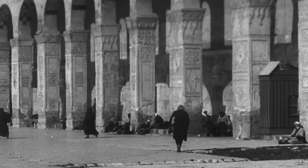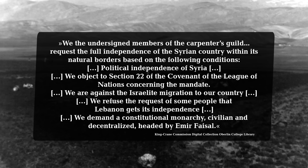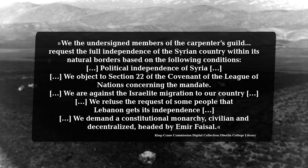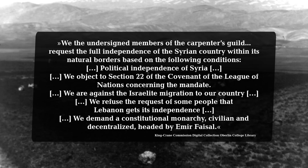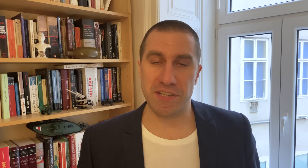This data came in the form of petitions, and one example is from the nearly 2,000 petitions sent to the commission — by a carpenters guild in the town of Tripoli, then part of what was known as Greater Syria: 'We the undersigned members of the Carpenters Guild request the full independence of the Syrian country within its natural borders. We object to Section 22 of the Covenant of the League of Nations concerning the mandate. We are against the Israelite migration to our country. We refuse the request of some people that Lebanon get its independence. We demand a constitutional monarchy, civilian and decentralized, headed by Emir Faisal.' This group of carpenters also stated that if they needed help for Syria they would prefer advice from the United States, or if not possible Britain, but under no circumstances France.